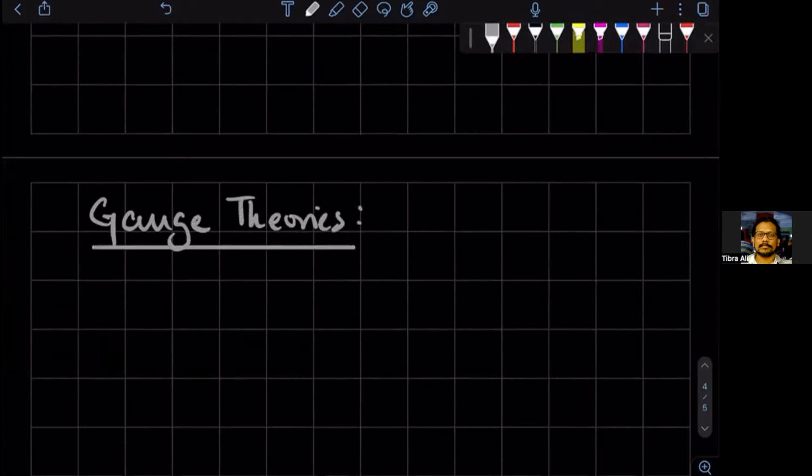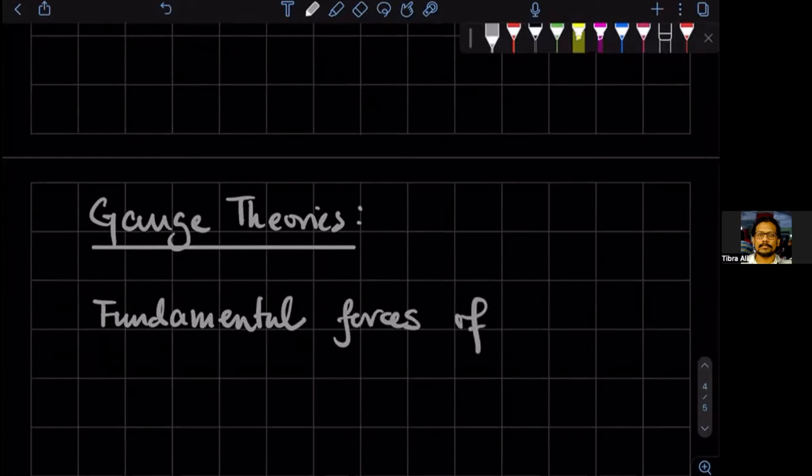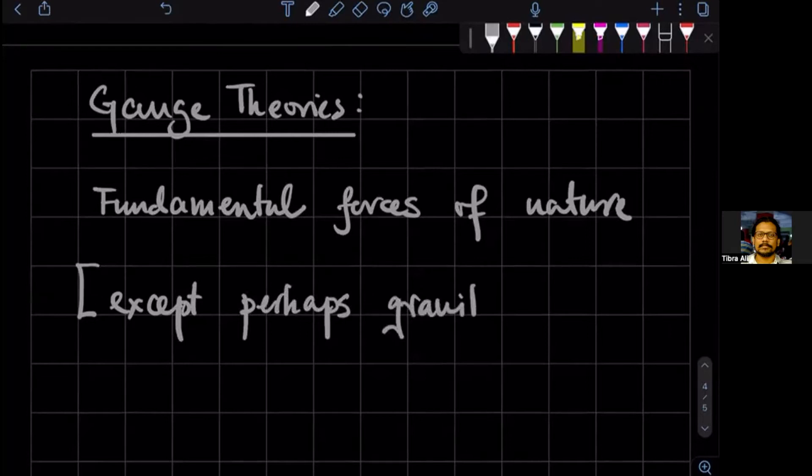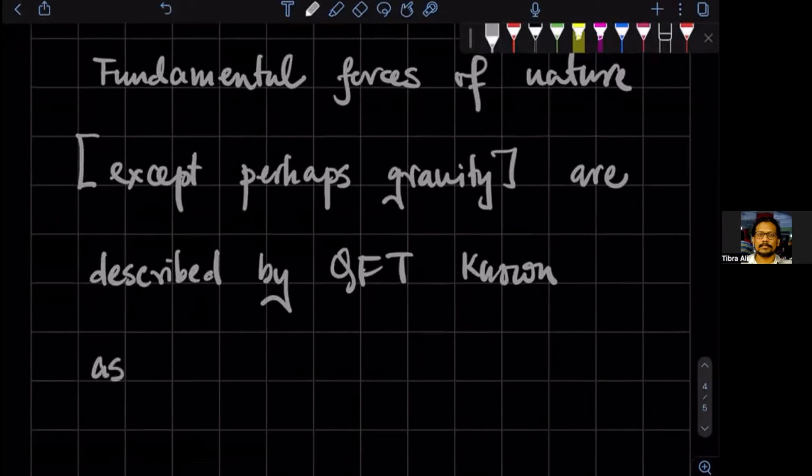Now the gauge theories are from our theories of fundamental particle physics. So all the fundamental forces, the fundamental forces of nature, except we are not exactly sure about gravity, so I'm going to say except perhaps gravity, are described by a kind of quantum field theory known as gauge theories.